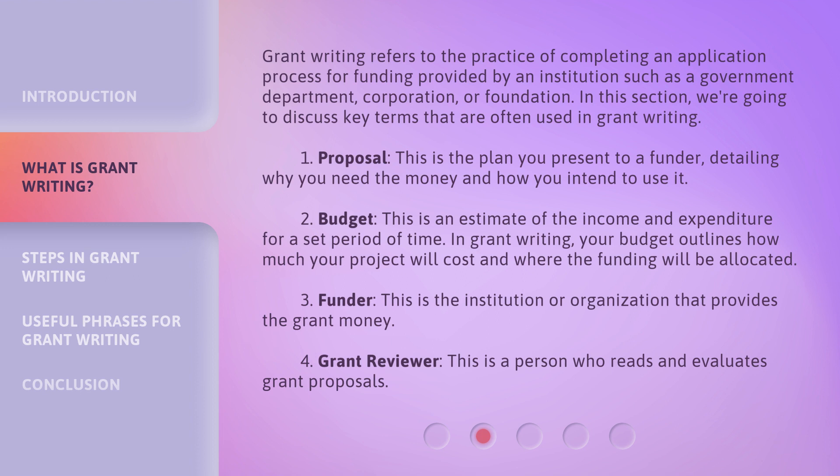1. Proposal. This is the plan you present to a funder, detailing why you need the money and how you intend to use it. 2. Budget. This is an estimate of the income and expenditure for a set period of time. In grant writing, your budget outlines how much your project will cost and where the funding will be allocated. 3. Funder. This is the institution or organization that provides the grant money. 4. Grant reviewer. This is a person who reads and evaluates grant proposals.